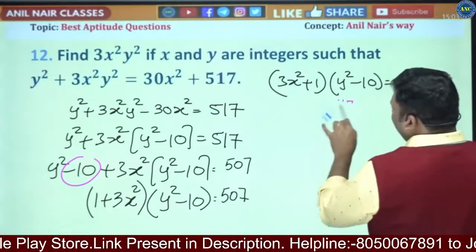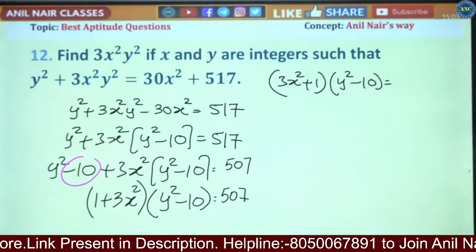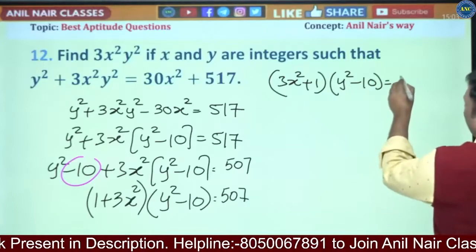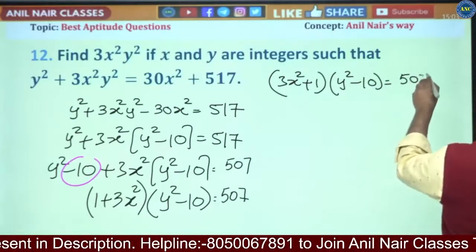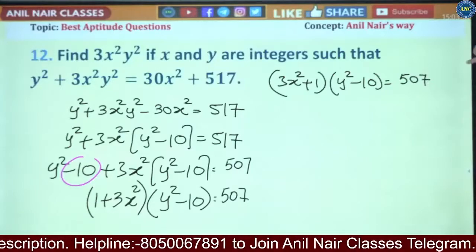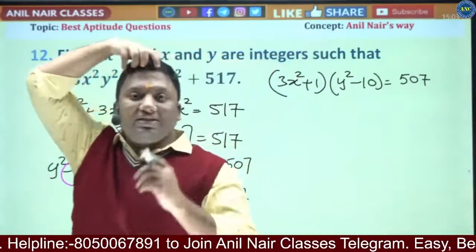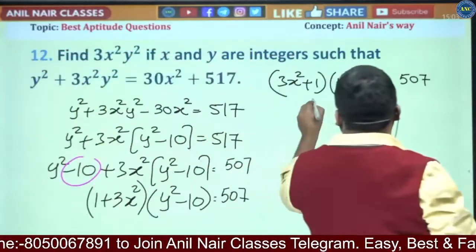So these numbers became 507. What is the sum of the digits? 5 + 7 is 12. That means it is divisible by 3. We will write down one by one.